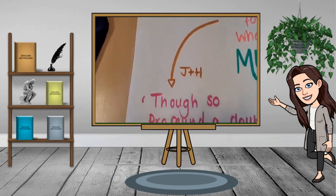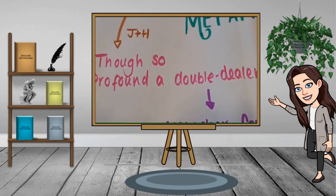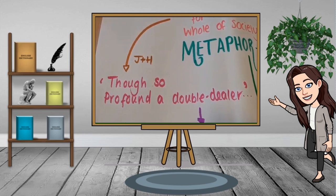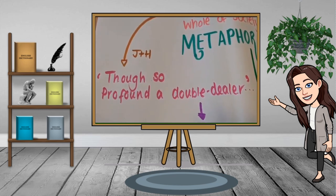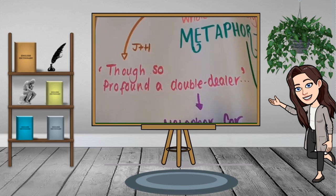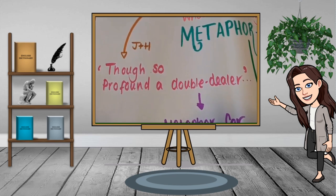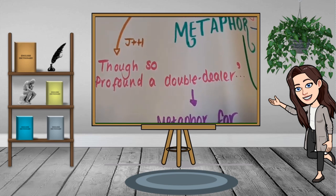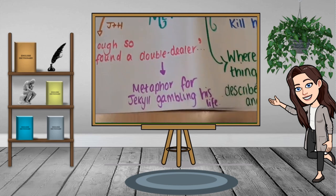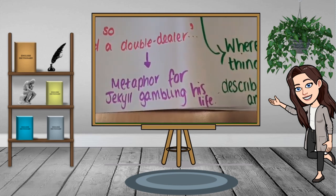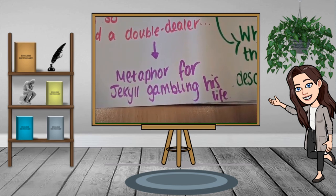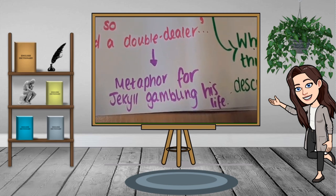Let's take a look at Jekyll and Hyde. In chapter 10, Jekyll reveals what he has done in the creation of Hyde and admits to his crimes. He talks about the creation of Hyde as if it is like a double deal: 'though so profound a double dealer.' This is actually a metaphor for Jekyll being willing to gamble his own life in response to the creation of Hyde.